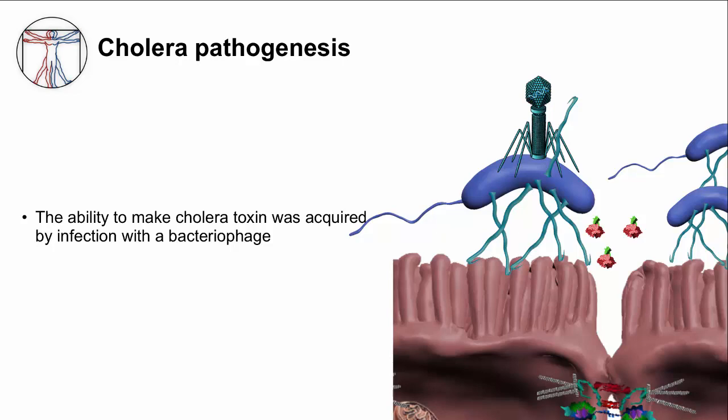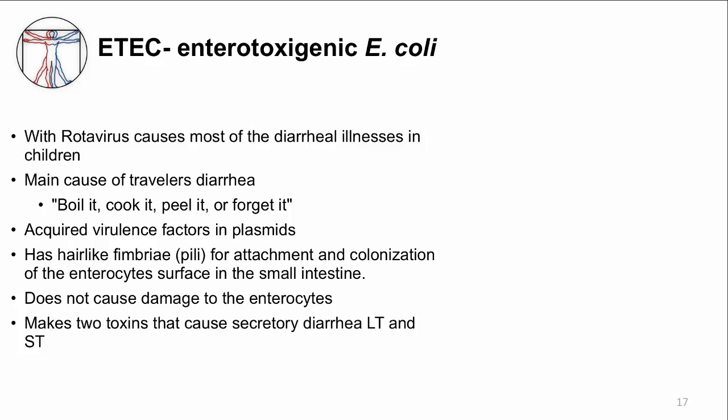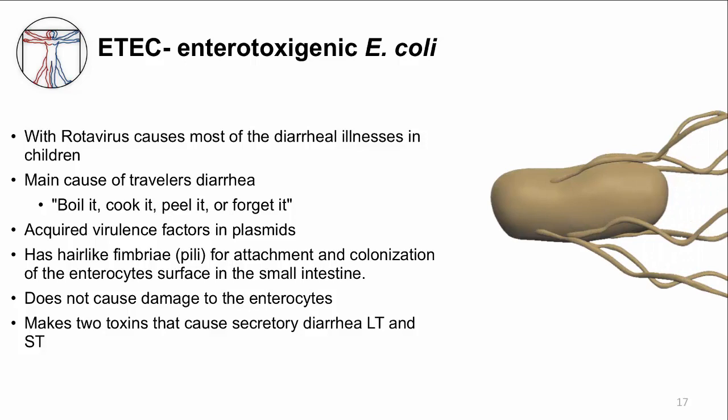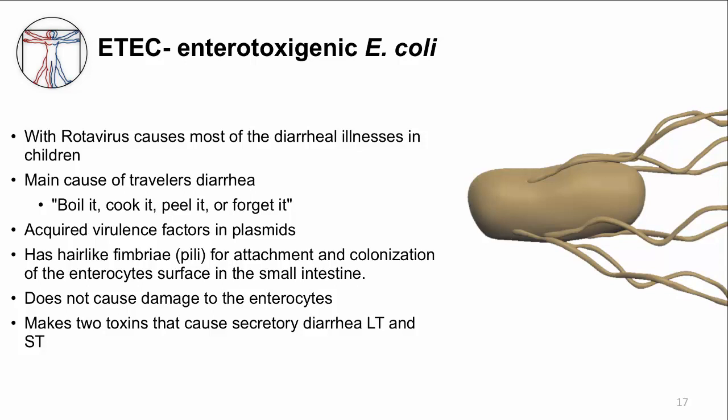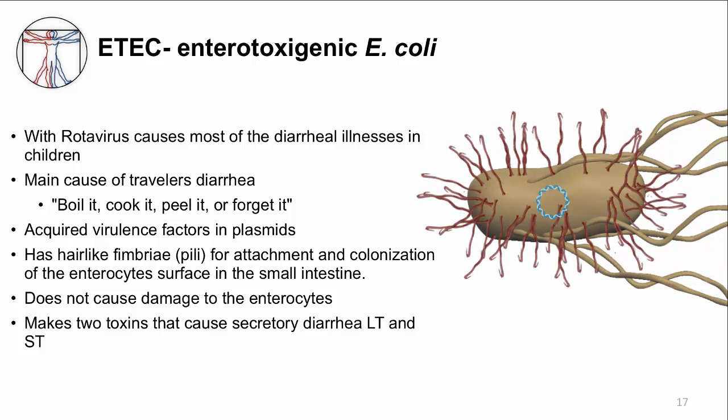Now I want to discuss another bacterium that causes watery diarrhea with a similar mechanism, one you'll see more often than cholera: enterotoxigenic E. coli, or ETEC. ETEC is a gram-negative rod with flagella, and along with rotavirus, it is the most common cause of diarrhea in children. It is also the main cause of traveler's diarrhea — hence the saying: boil it, cook it, peel it, or forget it. Unlike cholera, ETEC acquired its virulence factor via a plasmid, not a bacteriophage. The plasmid allows ETEC to make pili to attach to cells and to make two toxins — LT and ST, for labile and stable toxins — resulting in secretory diarrhea.